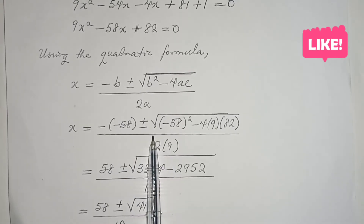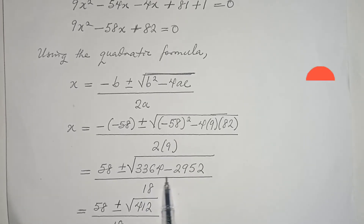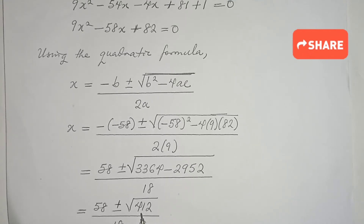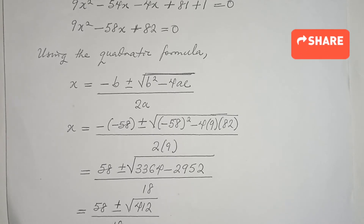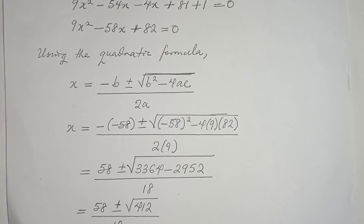Simplifying gives 3,364 minus 2,952 which reduces to 412, and that simplifies to the final answer. To emphasize: when solving radical equations you must start with isolating the radical — the algebraic expression under the root component of a radical equation.